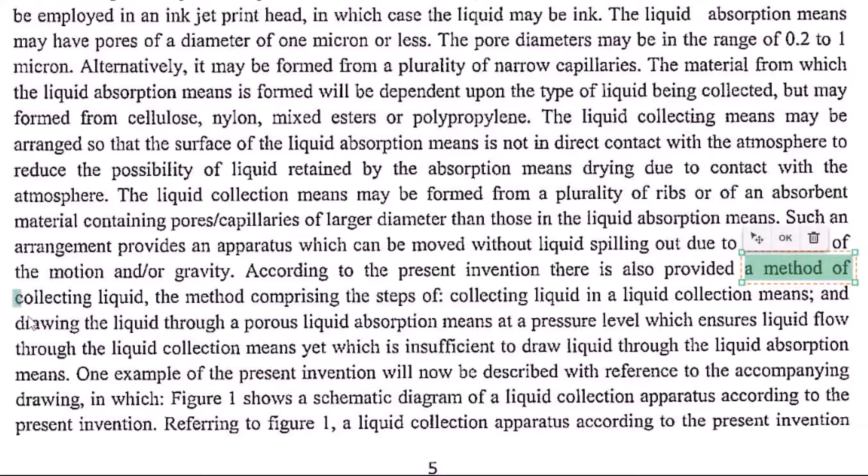Now comes the most important part: drafting the claims of the invention. Claims provide the scope of the invention — this is where we describe our apparatus and method by providing details about the novel, essential, and new things we have invented. A shortcut is to go back to the section from which you picked the summary of the invention, because the claims structure mirrors that content.